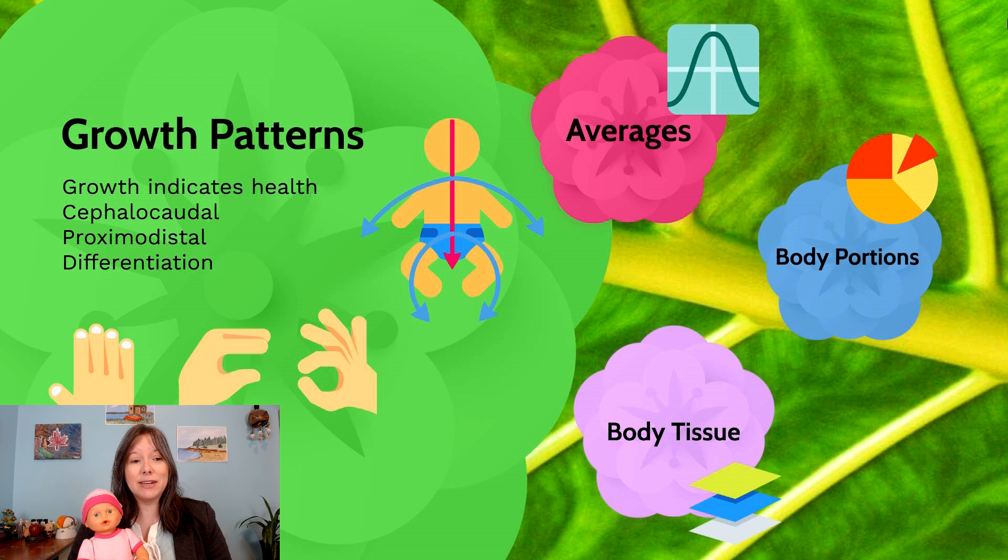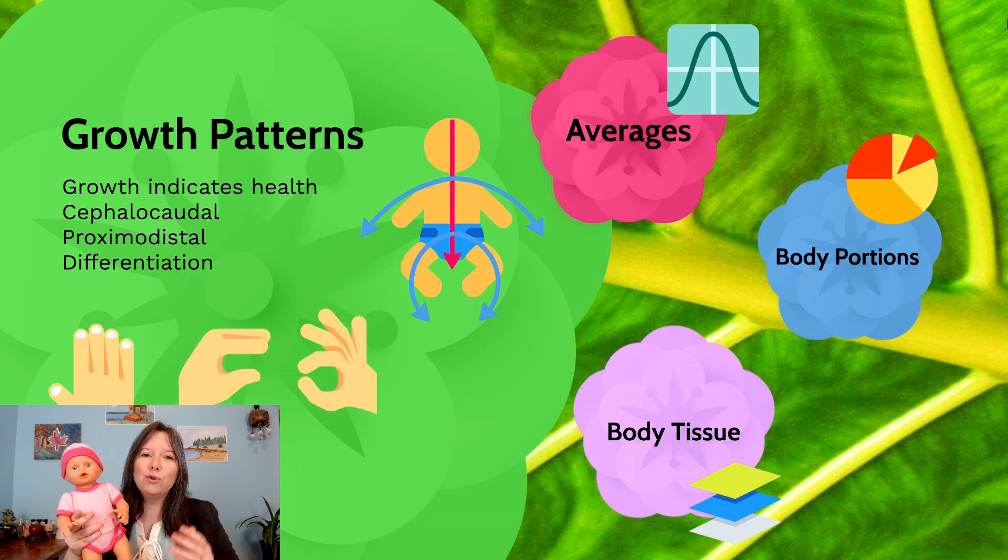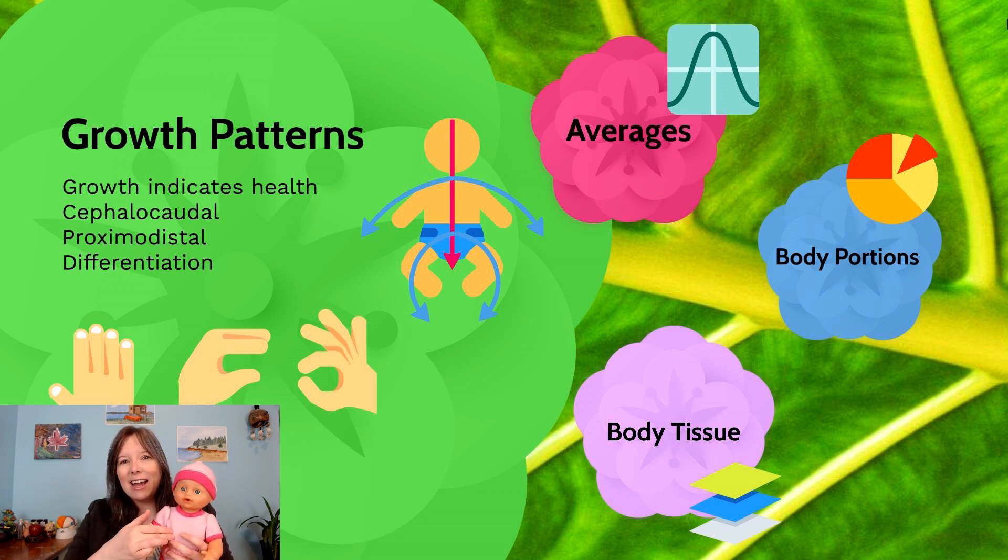A second growth pattern we pay attention to is proximodistal. And proximal means from the inside of the trunk outwards to the limbs and the extremities. And we also seen this in prenatal development. One of the very first things to develop would be things like the heart, the kidneys, the spinal column, things that are very inside our trunk would develop first. In comparison, our arms start off as little buds that would then develop outward. And we developed our arm before we developed our hand before we developed our fingers.